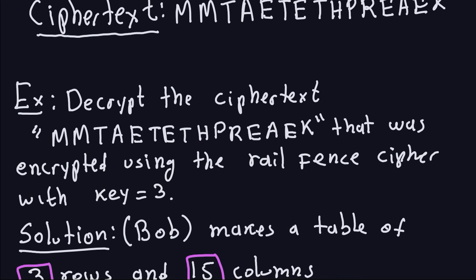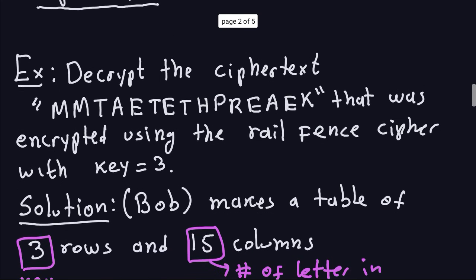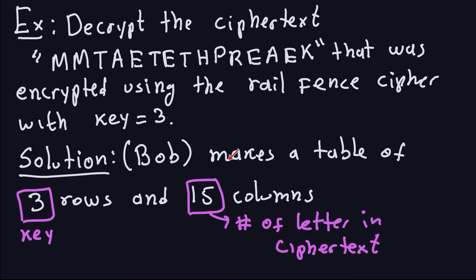This process is what Bob will do. Once he receives the cipher text, he will have to decrypt the message using the key that Alice and Bob agreed on, which is a key of 3. Bob is going to make a table again with rows and columns. The number of rows will be exactly the key — so 3 rows. The number of columns will be the number of letters in the cipher text. He knows that because he received the cipher text, so he has to construct a table with 3 rows and 15 columns.